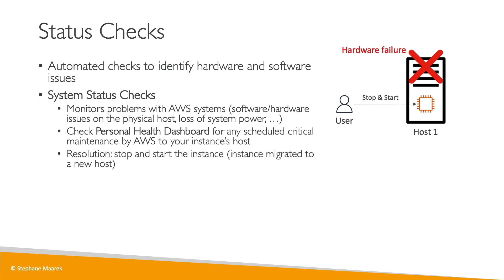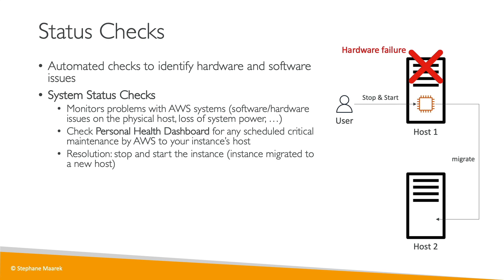Anytime you stop an EC2 instance and then start it again — not a reboot, but a stop and a start — then internally what's going to happen is that your EC2 instance will automatically be migrated to a different host within AWS. This also explains why it will get a new different public IP, because this will be the public IP of the host you're on. So it goes from host one to host two, and because we were stopped and started, we know it has moved and host two does not have any issues — our hardware failure problem is solved.